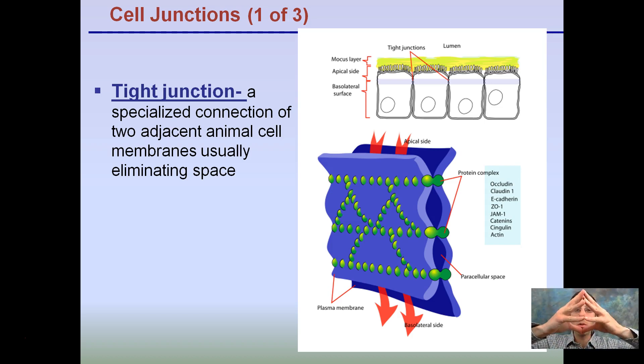In this case, the two hands would be touching here. Here are tight junctions, we're looking at basically eliminating that space that may be present there.